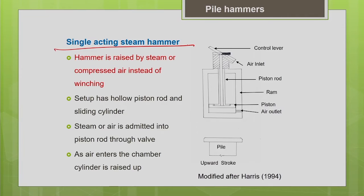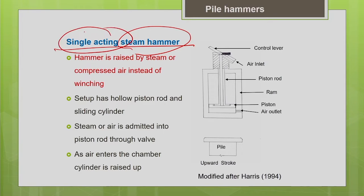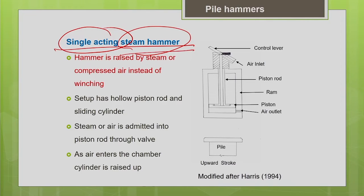Next is the single acting steam hammer, which is an improvement over the drop hammer. As the name indicates, you use steam energy — or compressed air — only in the upward stroke to lift the hammer, while the downward stroke is a free fall by gravity. For this method, you may need a steam boiler or air compressor. The hammer is raised by steam or compressed air instead of winching.